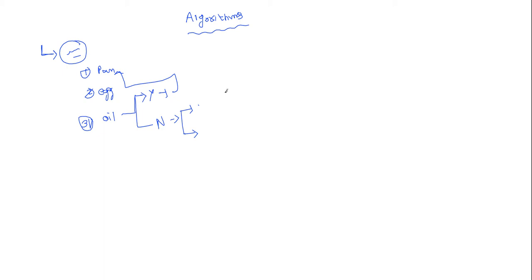Another example: suppose I want to read one chapter. First step is to open the book. Second step is to open the first page and read the index. Third step is to go to that concept and read it. These step-by-step instructions are called an algorithm.